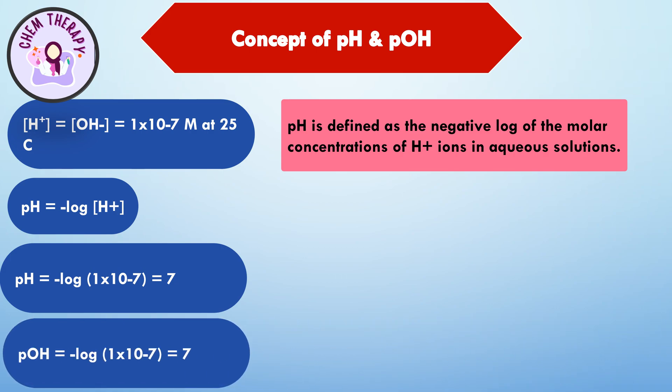Similarly, pOH is the negative log of hydroxyl ion concentration. By taking the negative log, the values become more convenient — for example, 7 is more convenient than 1×10⁻⁷.